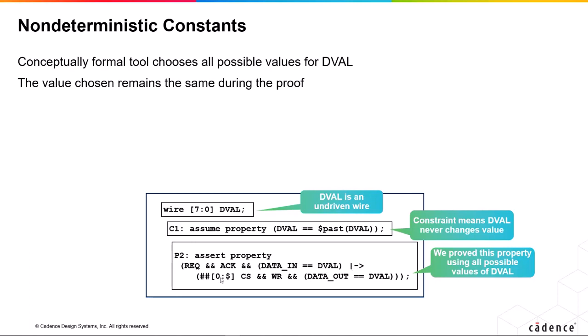we're saying at some point in the future—and we really should be writing s_eventually there, by the way, rather than ##[0:$] infinite—if we get a select and a write, the data_out equals the same value.